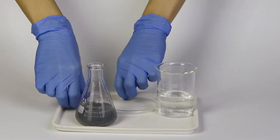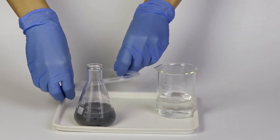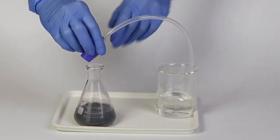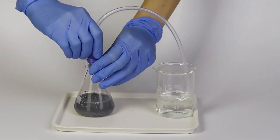Securely close the flask with the rubber stopper. Now take the loose end of the silicone tubing and place it into the soapy solution in the beaker.